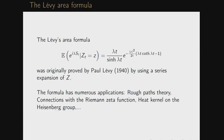There is also a more unexpected connection with analytic number theory, in particular with the Riemann zeta function, uncovered by Yor, Pittman, and Bian. This is an exact formula for the Mellin transform of the stochastic area expressed in terms of the zeta function — a probabilistic representation of the Riemann zeta function. From that paper you can even find a probabilistic argument that there exist infinitely many primes equal to 1 modulo 4.